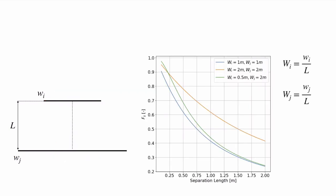Here's an example of a view factor between infinite strips (infinite into the page) for surfaces i and j, where we can vary the length of surface i with respect to surface j. This equation is available, and I've plotted it for a few cases where the width of i and j are equal at one meter. As we increase the separation distance, less of the radiation leaving surface i is incident upon surface j — which of course makes sense.